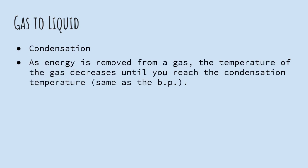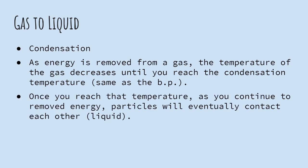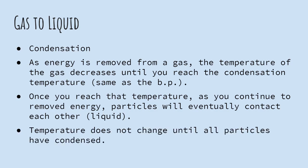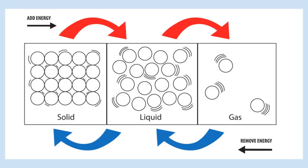Going the other way, gas to liquid, we have to cool it down. It's called condensation. We remove energy from a gas. It starts to slow the particles down. Temperature of the gas goes down until you reach the condensation temperature, which is the same temperature as the boiling point. Once you reach that temperature, as you continue to take energy away, particles will stop moving as quickly. They'll start to contact each other. They'll become a liquid. And again, temperature is not going to change during this phase change. It's going to stay constant until all the particles have condensed and then it'll start to drop again.